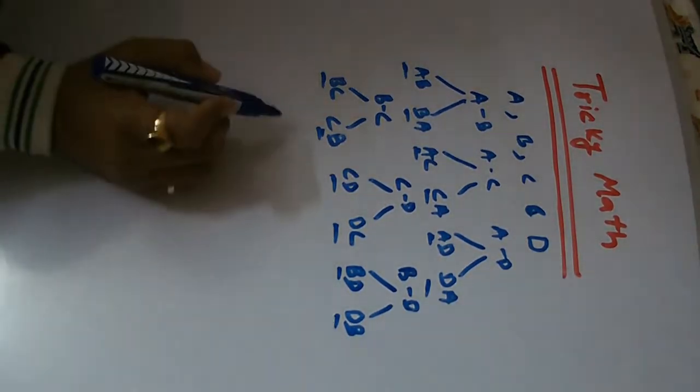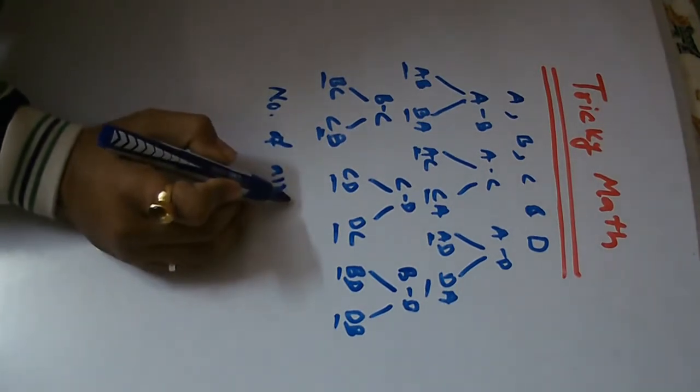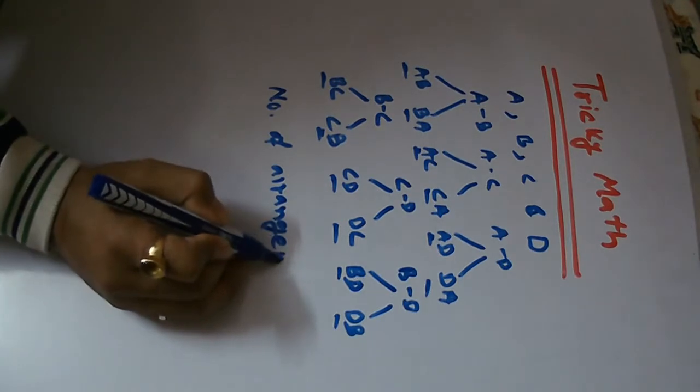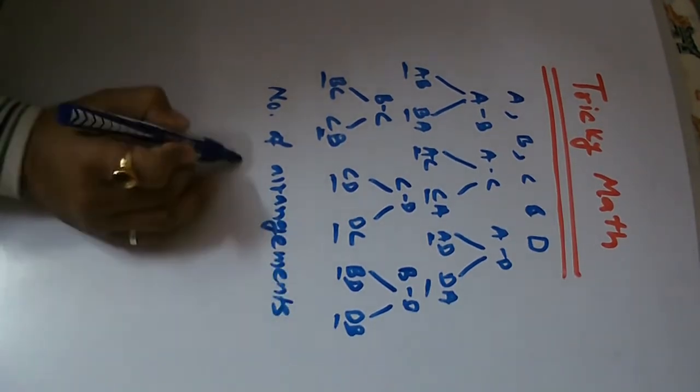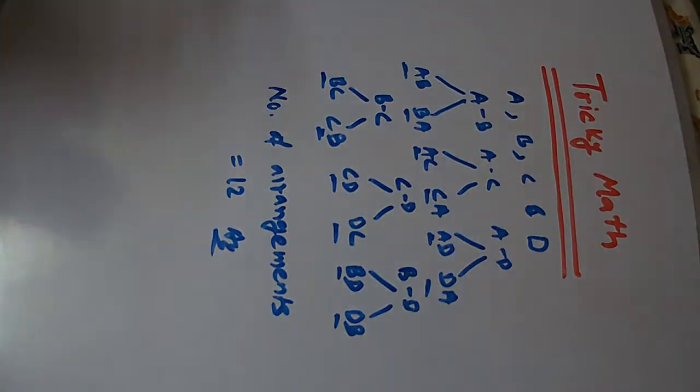Now the number of arrangements is equal to 12. This is the answer. But we have to understand this calculation, and why we are getting this answer.